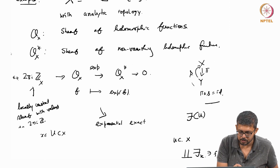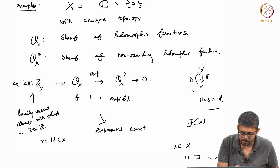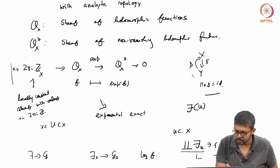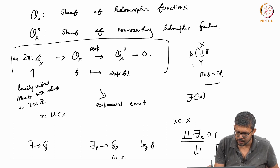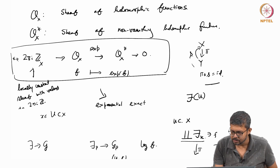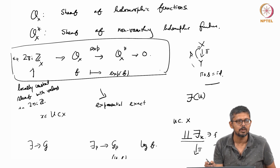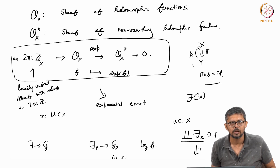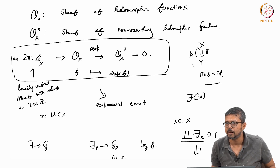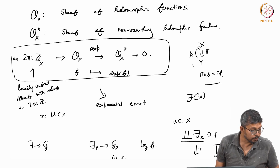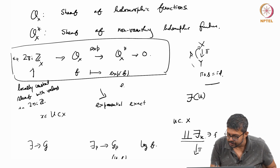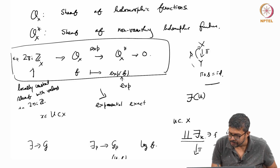This exact sequence — the exponential exact sequence — appears and is very important. It has nothing to do with x being c minus 0 specifically; you can take x to be any complex manifold and do such a thing. For simplicity I took x equal to c minus 0, but you could have taken x to be any complex manifold.